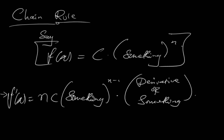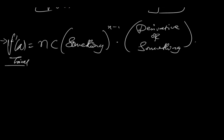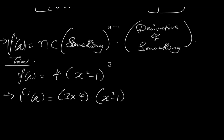So basically, I'll make you understand this with a simple trial. Say you have a function f of x being equivalent to 4(x squared minus 1) to the power of 3. So in this case, something is x squared minus 1, c is equivalent to 4, and n is equivalent to 3. So this implies that f prime of x is equal to n times c, which means 3 times 4, times the something (x squared minus 1) with the power reduced by 1, times the derivative of that something. The derivative of x squared minus 1, applying the power rule, will simply be 2x.